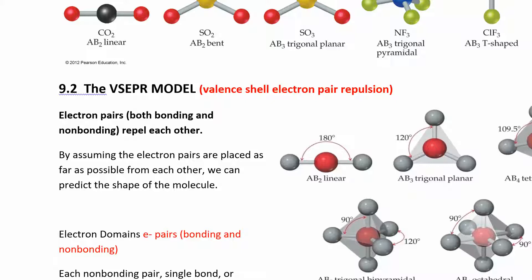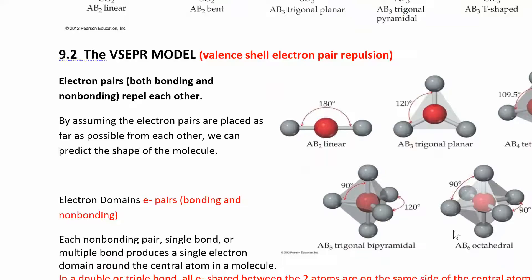Because electrons repel each other, they make atoms occupy certain positions in space — they try to get as far away from each other as possible. If you had a central atom with two other atoms, the electrons in those bonds want to get as far apart as possible: two gives 180 degrees, three gives 120 degrees, four gives a tetrahedral arrangement, and five gives 90 degrees and 120 degrees — basically like a trigonal planar combined with a linear.